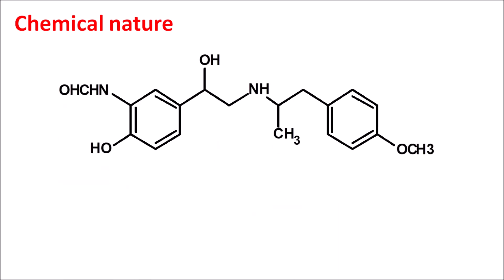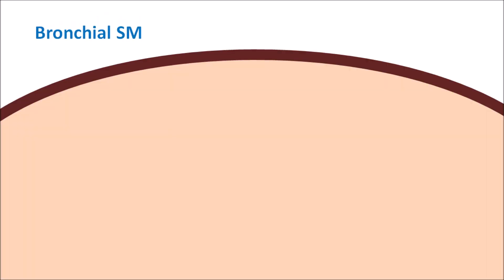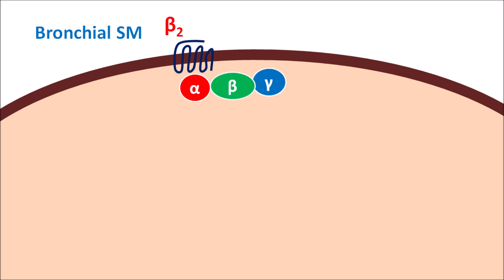This is the structure of Formoterol — we can clearly observe it has the formamide moiety, so Formoterol is a formamide derivative of catecholamines. Beta-2 adrenergic receptors are present on bronchial smooth muscle and are G protein-coupled receptors coupled with alpha, beta, and gamma subunits. Formoterol acts as a long-acting beta-2 adrenergic agonist with a duration of action of around 12 hours, so it can be given twice daily.